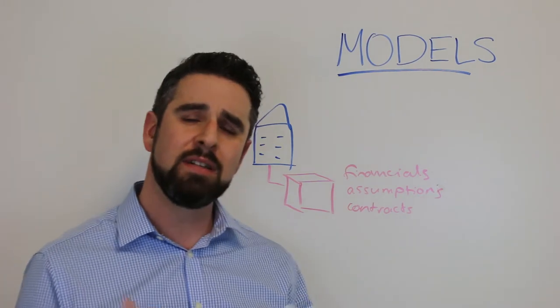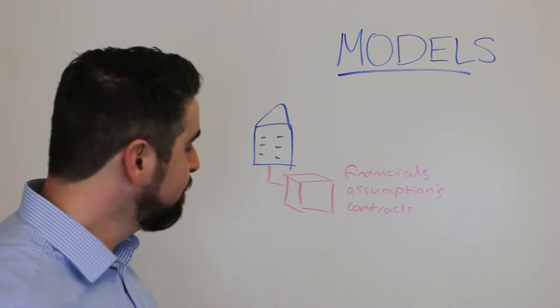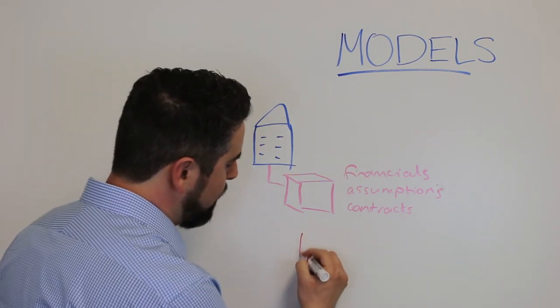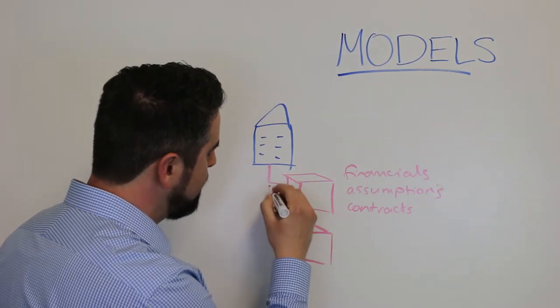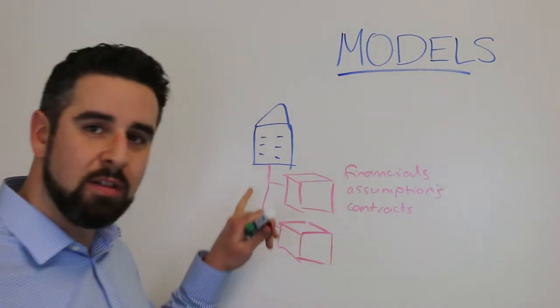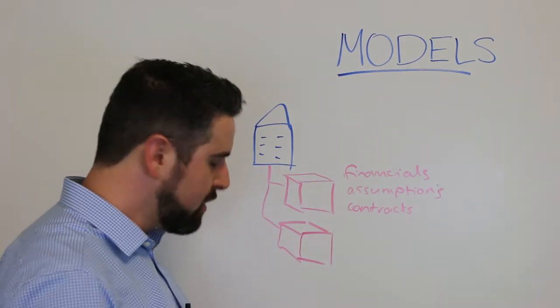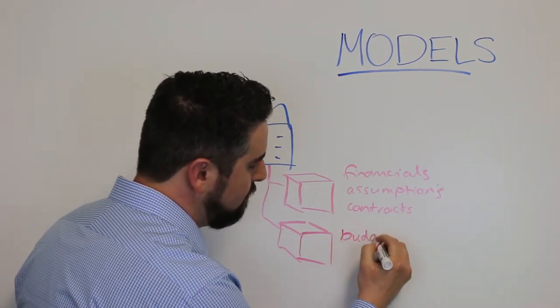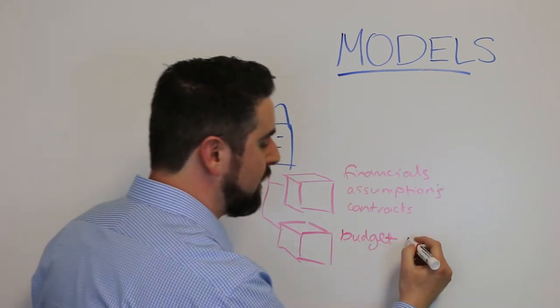Now the simplest example of leveraging models in the system is when you do a budget. So what we have here is another model. It still represents all the information about this particular property but now we've captured here our budget data for a particular year. Let's say it's our 2018 budget.